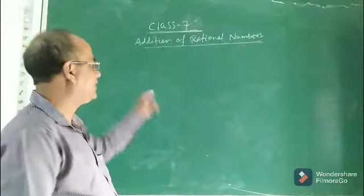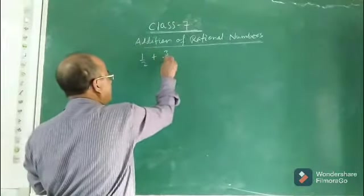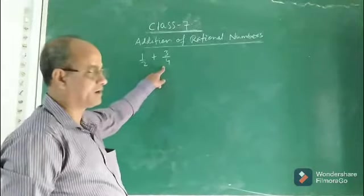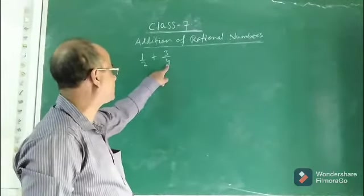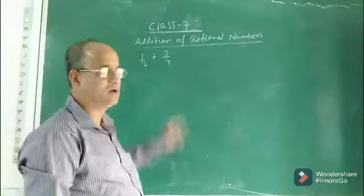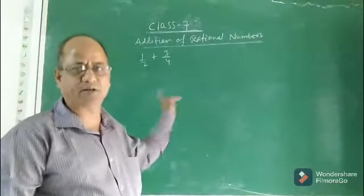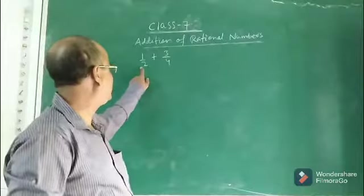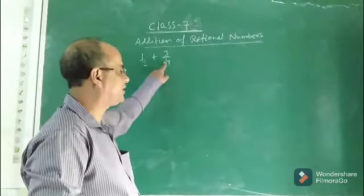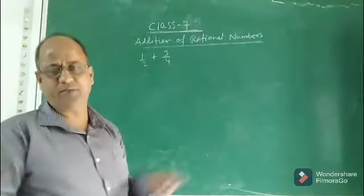Suppose I am giving one example. Suppose you are given two rational numbers: 1 by 2 and 3 by 4. How to add this? Look at these two rational numbers — no doubt both are positive rational numbers. Now, how to add them? Here the denominators are different. The denominator of this rational number is 2, and here the denominator is 4. That means these two rational numbers have different denominators.